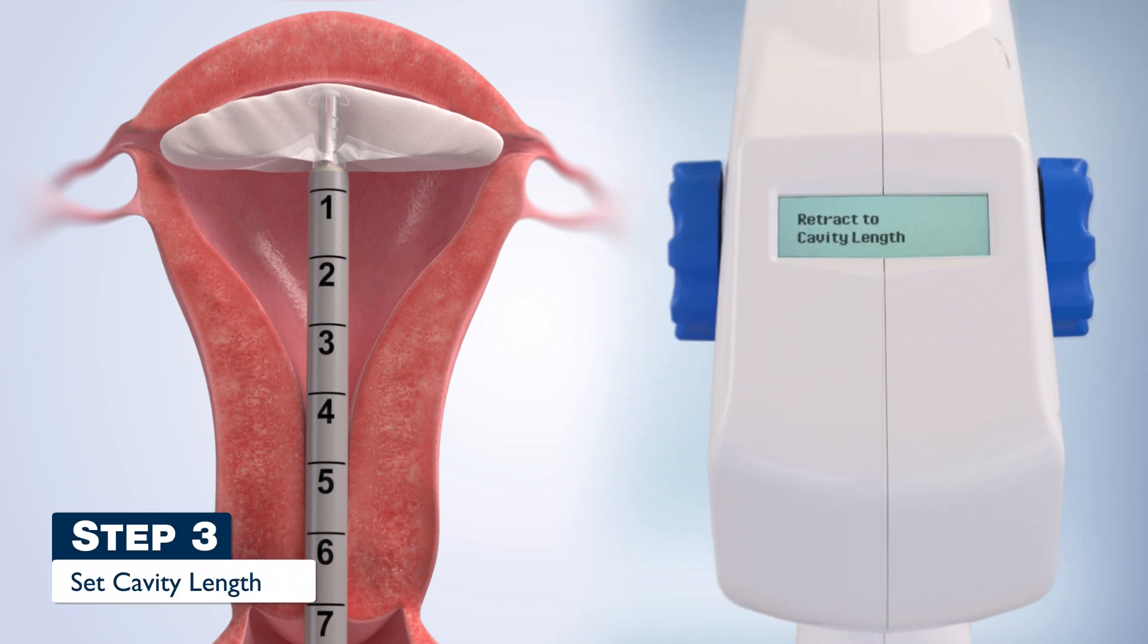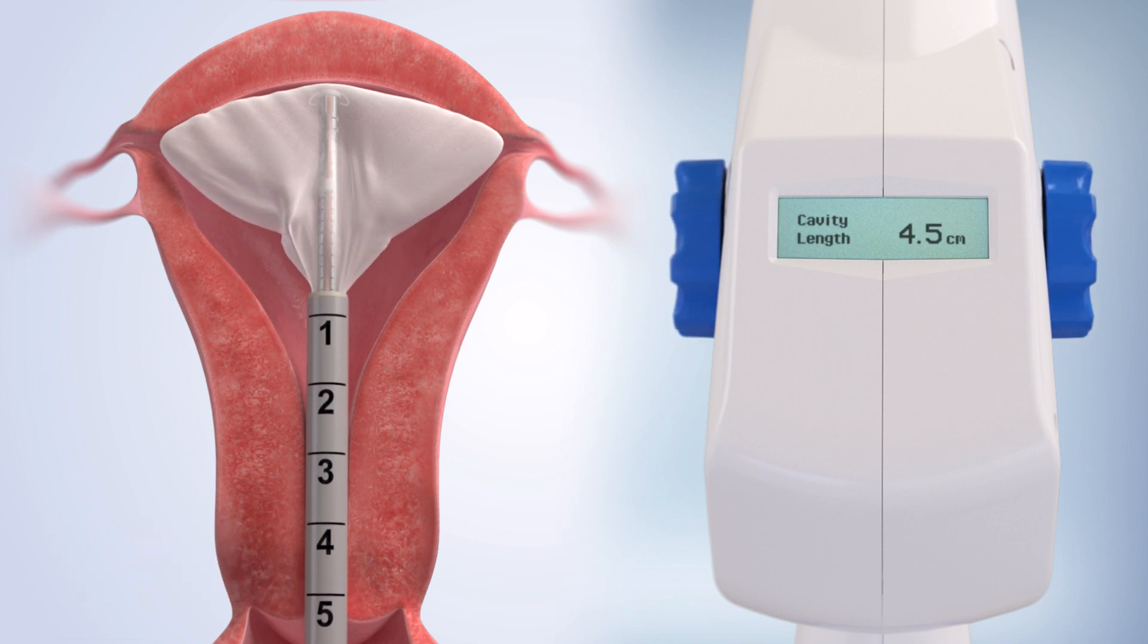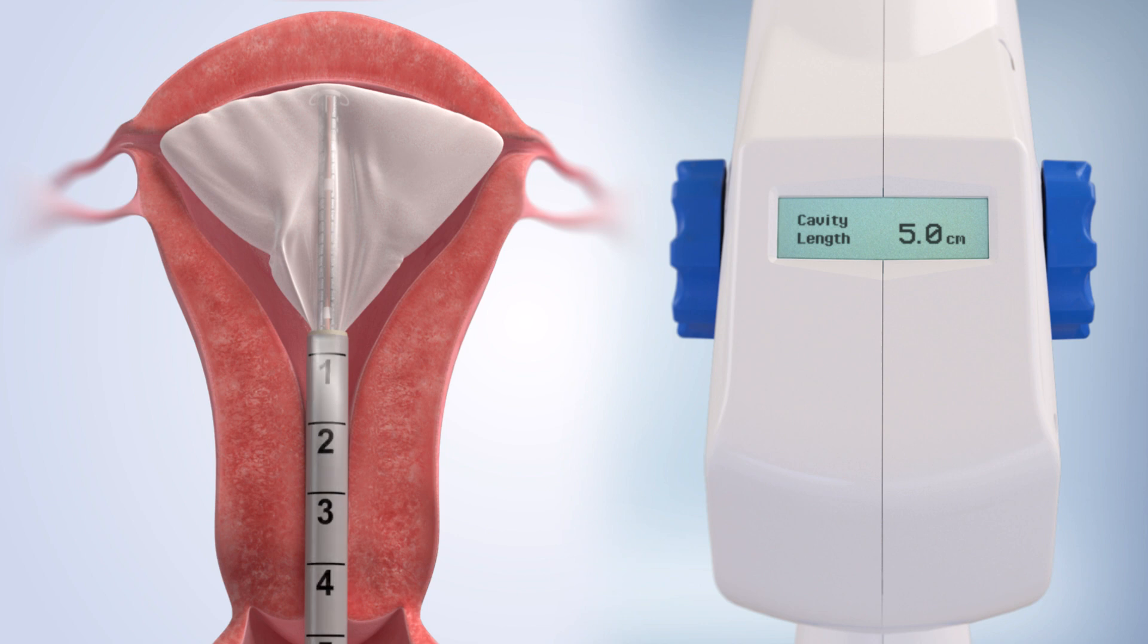Step 3. Turn the sheath retraction knob until the calculated uterine cavity length is displayed on the LCD screen. The sheath is designed to protect the cervix and adjacent tissue. Gently reconfirm that the probe tip is at the fundus.